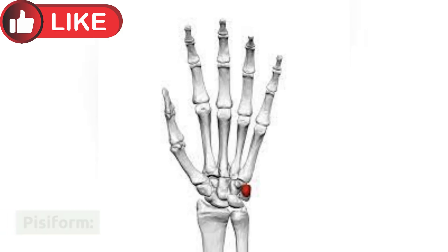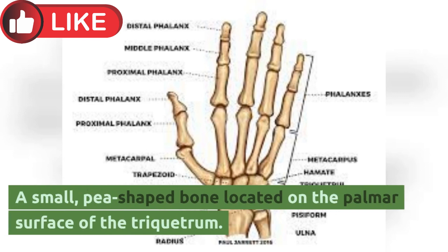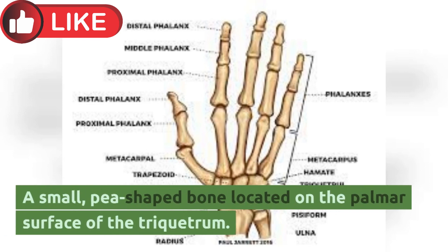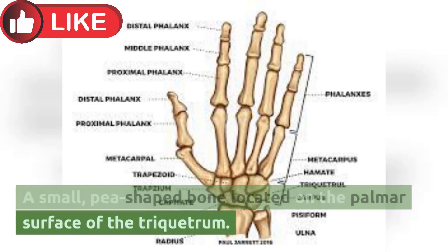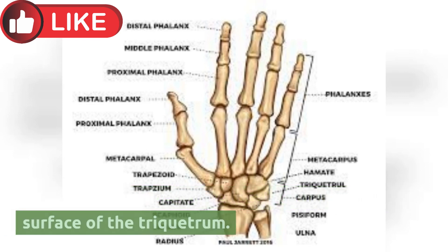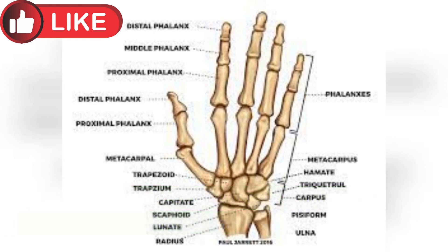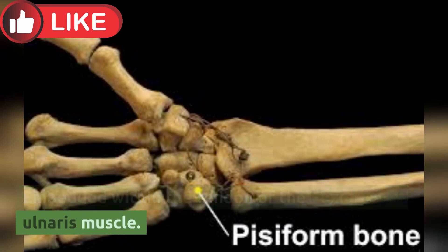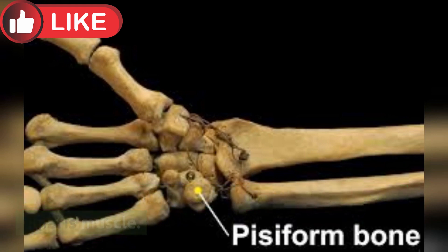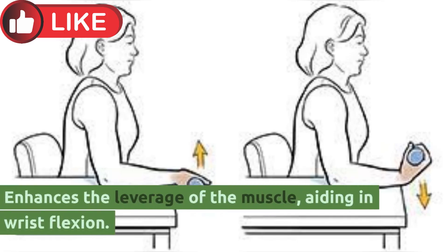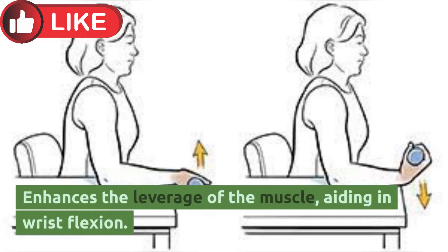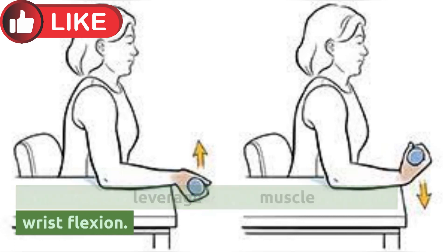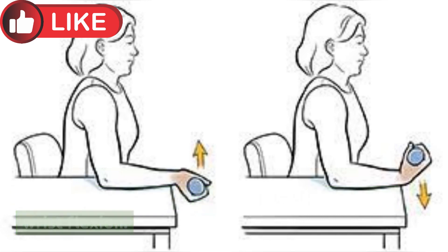Pisiform: A small, pea-shaped bone located on the palmar surface of the triquetrum. It is embedded within the tendon of the flexor carpi ulnaris muscle, enhancing the leverage of the muscle and aiding in wrist flexion.